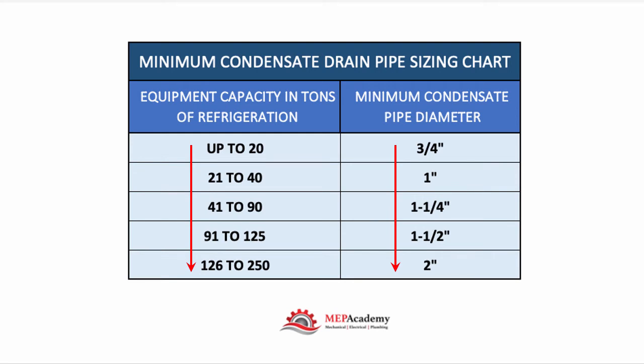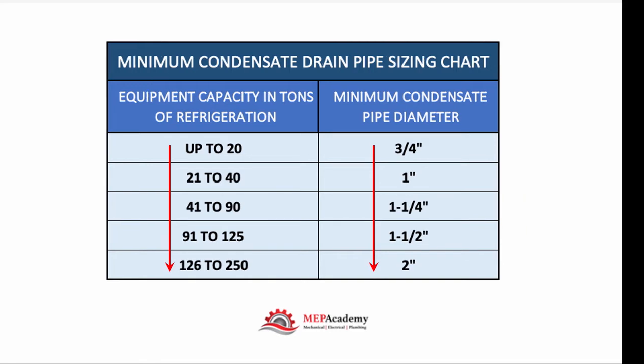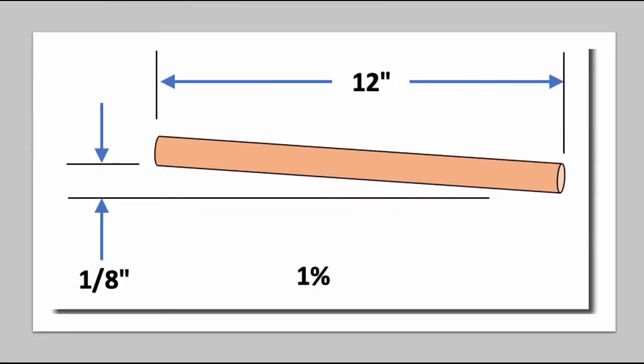As you accumulate more tonnage tied into your main condensate pipe, you will increase the size. The pipe needs to be sloped an eighth inch per foot, or one percent — that's an eighth inch every 12 inches — to make sure that the condensate keeps moving.